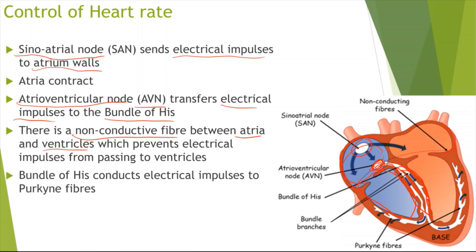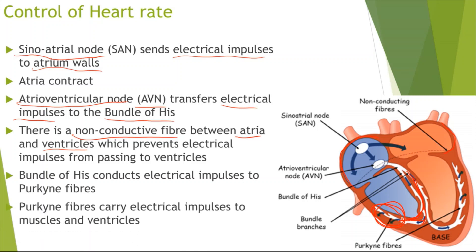The bundle of His then conducts the electrical impulses to the Purkinje fibres. The impulses travel down the bundle of His and reach the Purkinje fibres around the bottom of the heart, which carry the electrical impulses to the muscles of the ventricles.